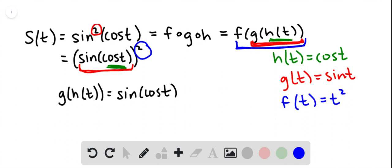so that if we were to find f of g of h of t, we would be squaring what we just had. And that's what we wanted. That's what s of t is.